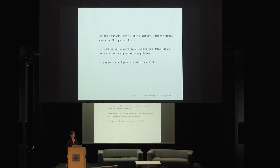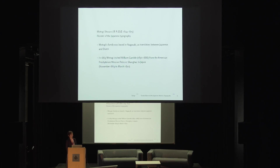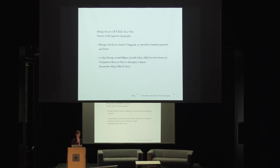They banned missionaries, and with the missionaries all the equipment was gone from Japan. For 250 years, Japanese artists and craftsmen focused on developing further the woodcut printing. Typography came in again only in the 19th century. One of the pioneers was Moto Gishoso, who was born into a family mainly doing translation between Japanese and Dutch and wanted to make a dictionary. He invited William Gamble to come to Japan and teach him the fundamentals of cutting letters, printing, and bookbinding.